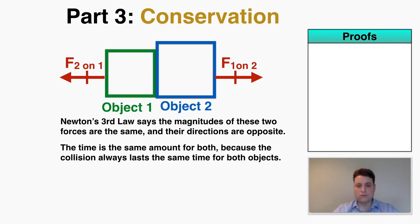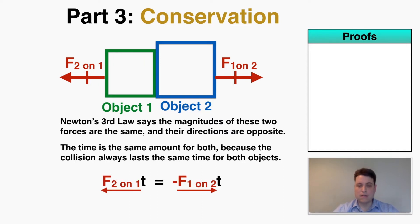So that means if the forces objects put on each other are always the same, and the time that it takes to apply that force is always the same, then the force times time on one equals the negative force times time on the other. Based on our definition of impulse, whenever one object creates an impulse on a second object, the second always creates the exact same impulse but in the opposite direction on the first object.